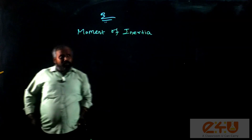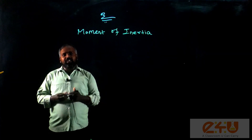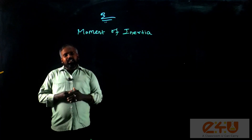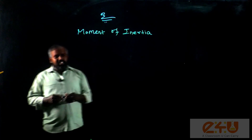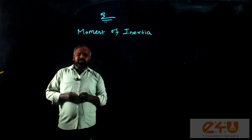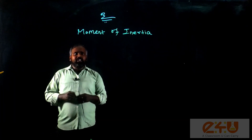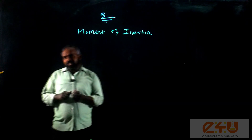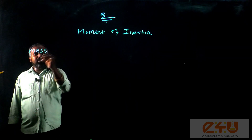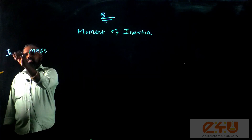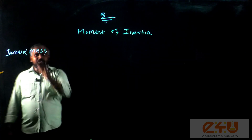We are already familiar with what is inertia in Newton's laws of motion. Any body which can oppose the change of state — that property is generally called inertia. In linear motion, the inertial property is proportional to the mass of the body.